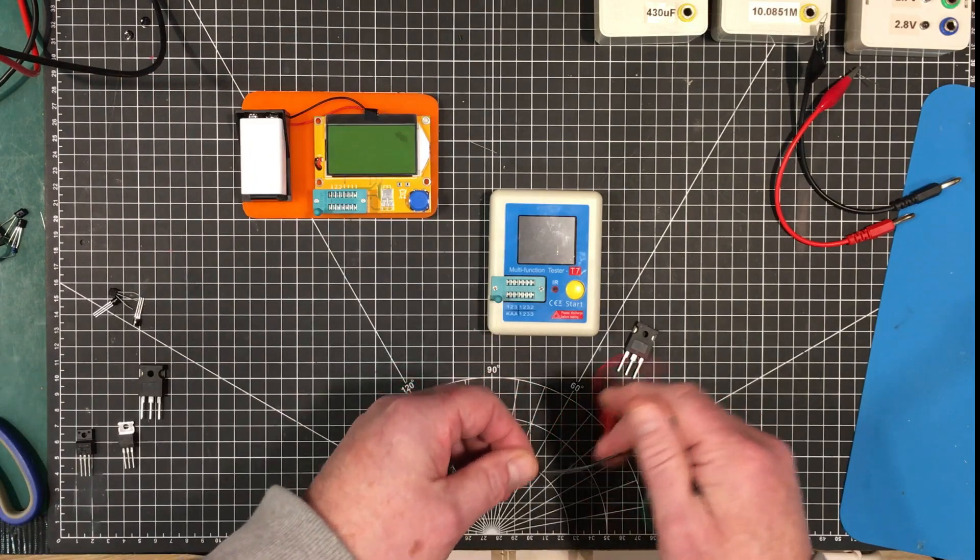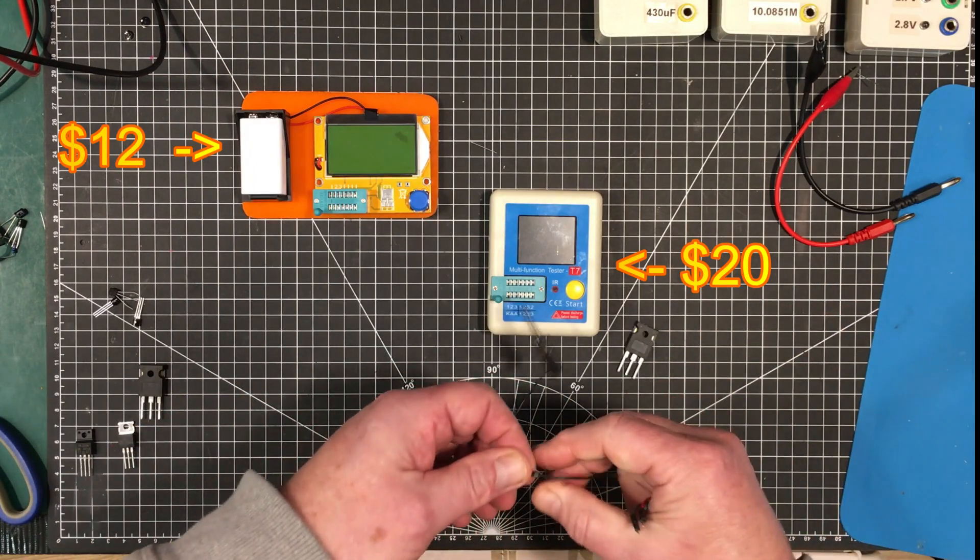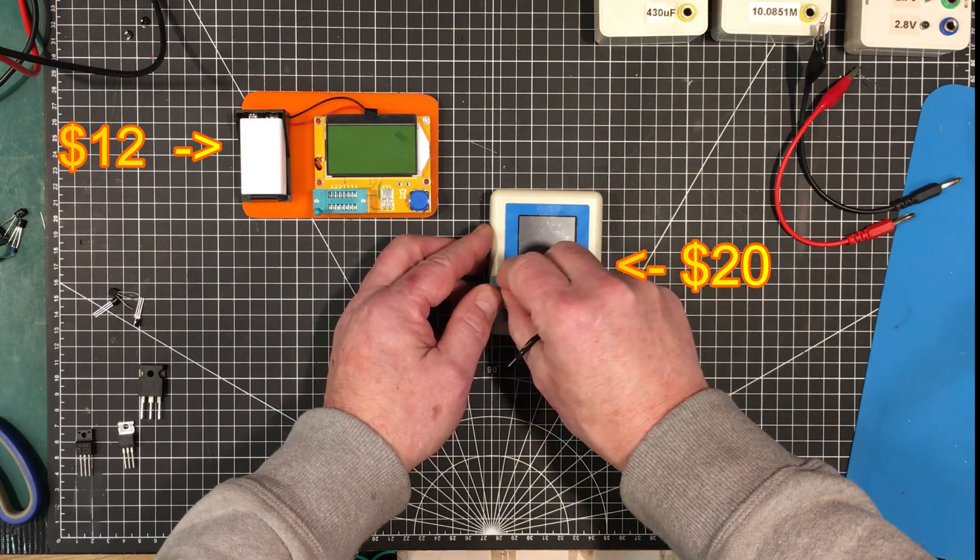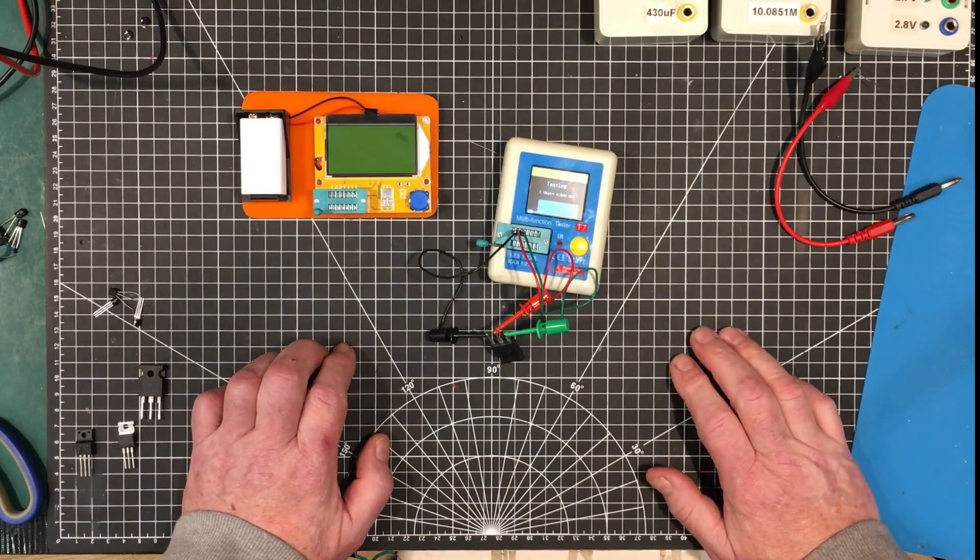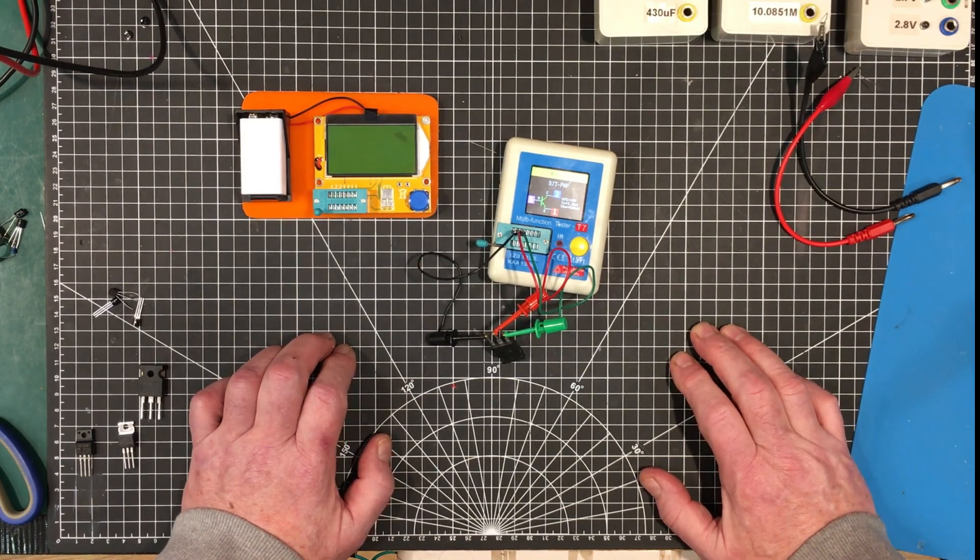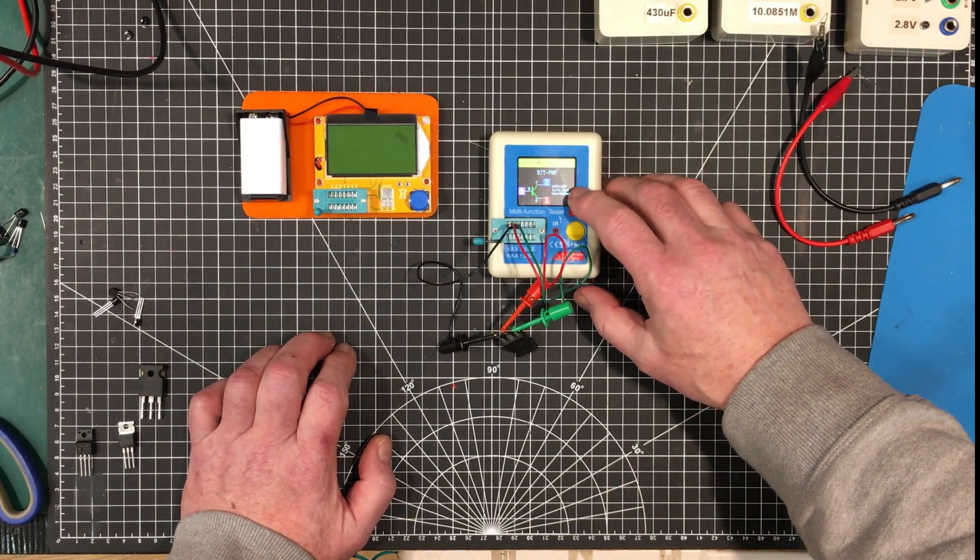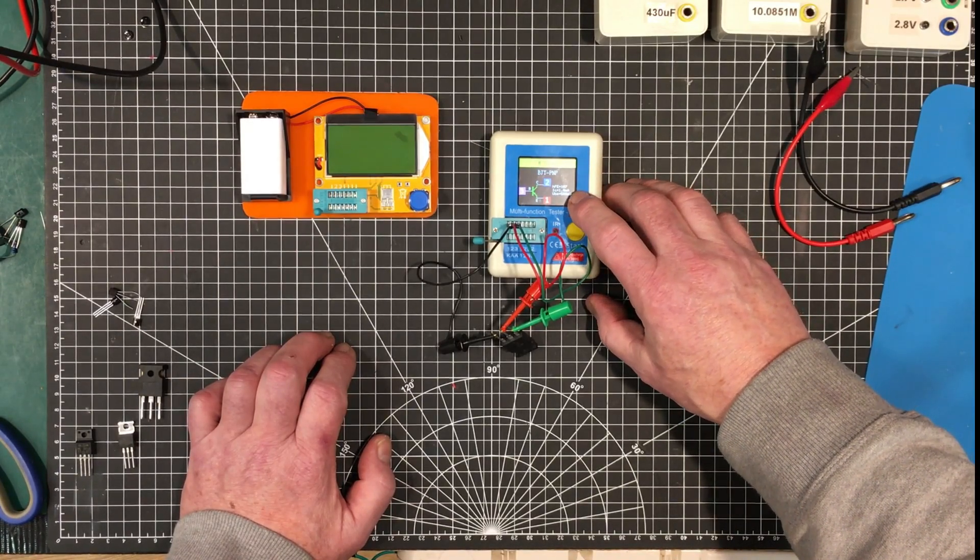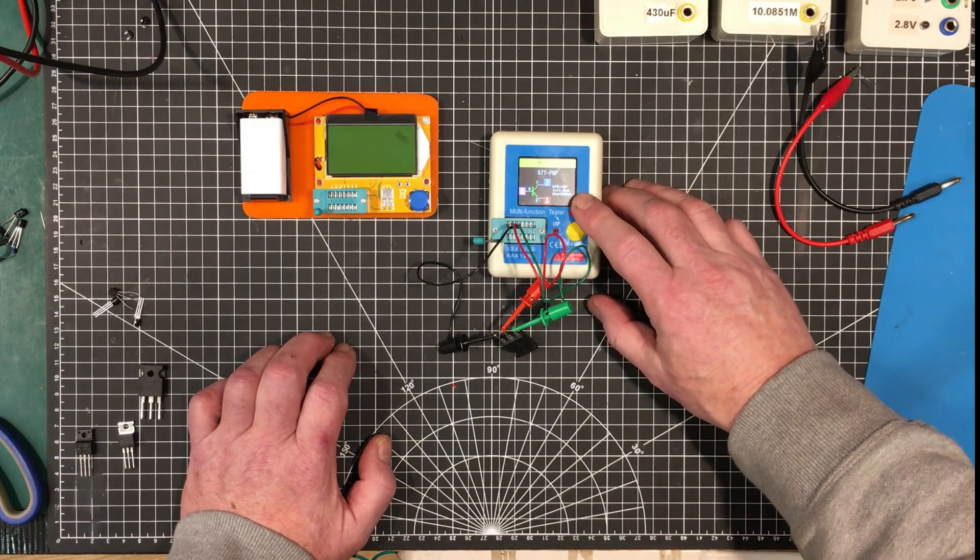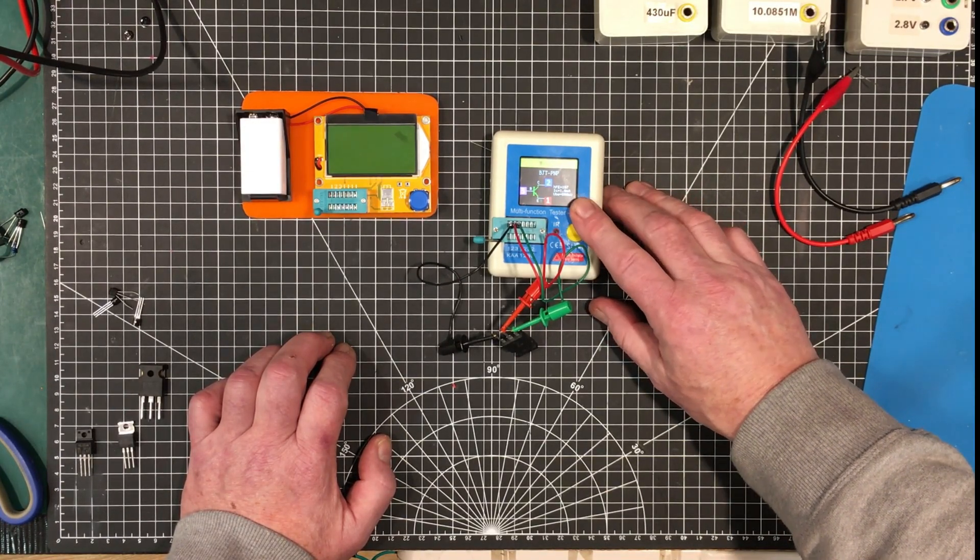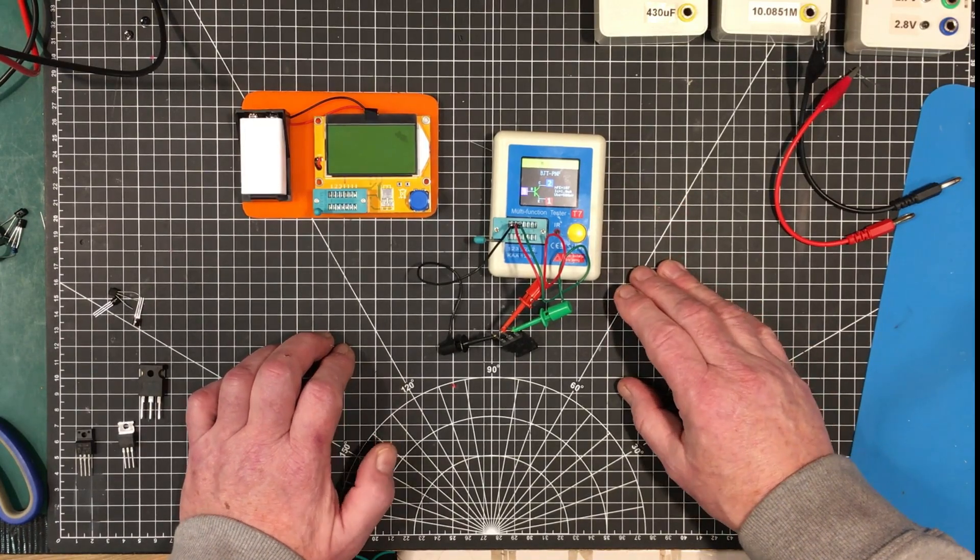So that's a drawback to this. But then you've got to consider the price, right? Yeah, it is a PNP transistor, big power transistor. Gain of 107. At collector current of one milliamp and the base emitter voltage of 500 millivolts.